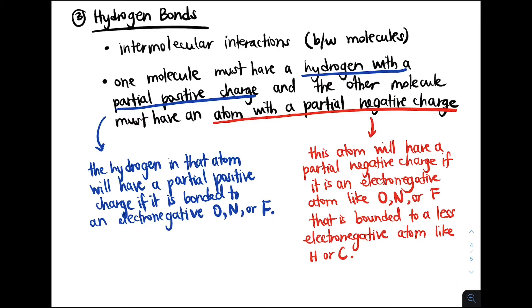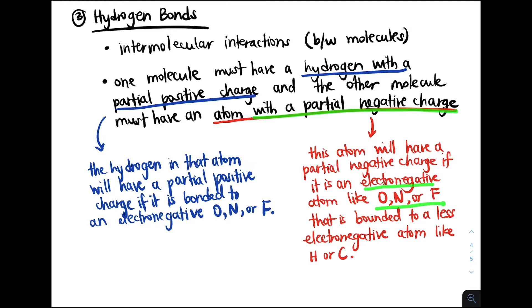Just to drive home this point: in order for a hydrogen bond to happen, we need a hydrogen with a partial positive charge — which we get if a hydrogen is bonded to a highly electronegative atom like oxygen, nitrogen, or fluorine. Then in the other molecule, we need an atom with a partial negative charge, such as an oxygen, nitrogen, or fluorine bonded to a less electronegative atom.